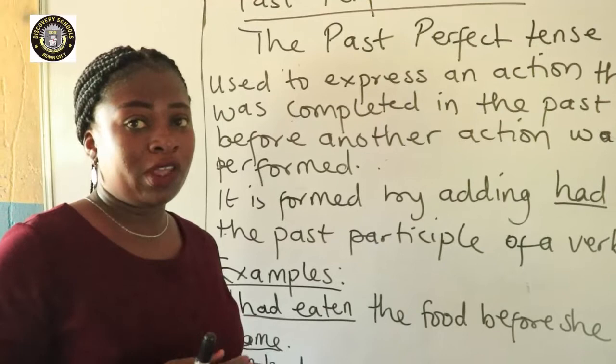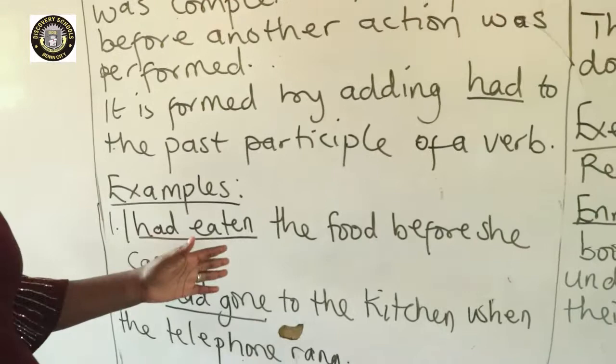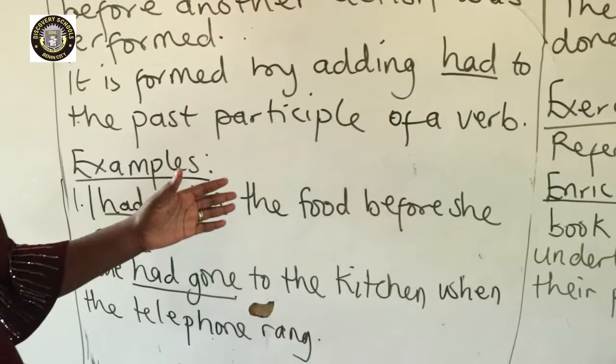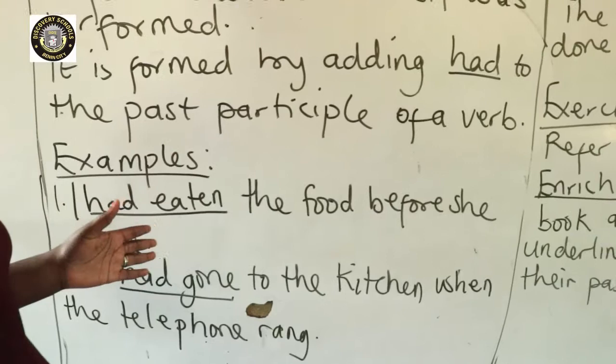So, let's look at examples of sentences showing the past perfect tense. The first example is: 'I had eaten the food before she came.' That is, the eating was done before the coming — two actions, the eating was done before the coming.